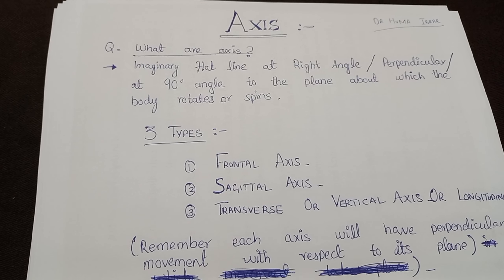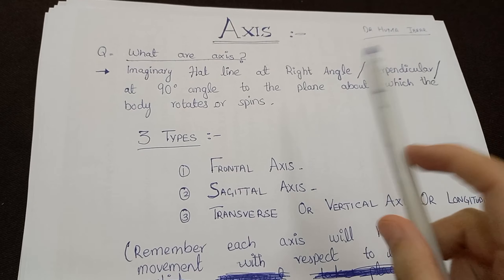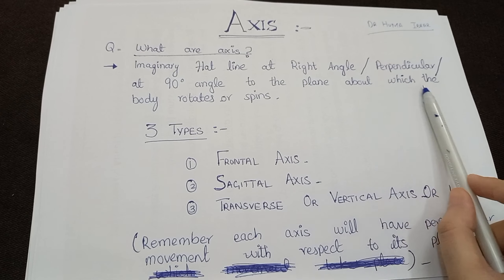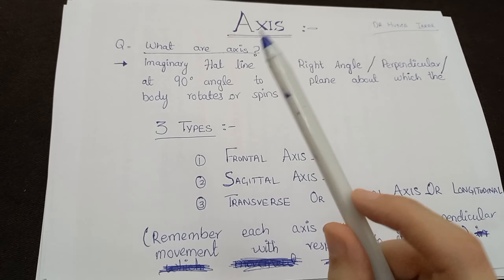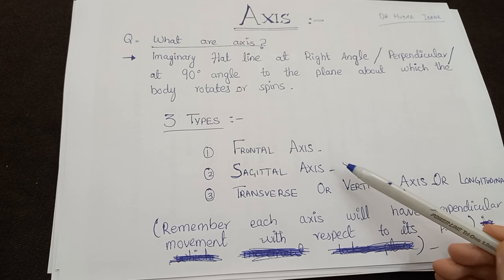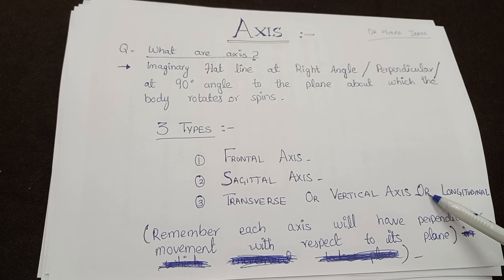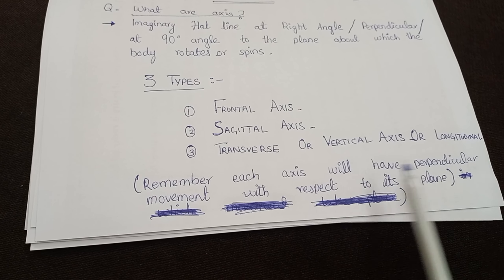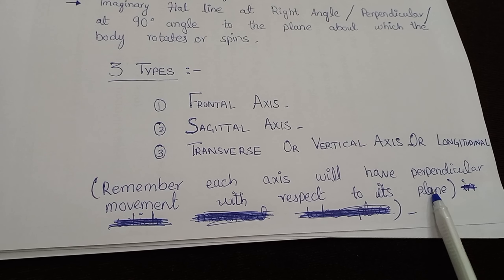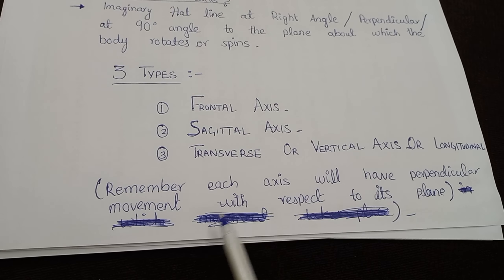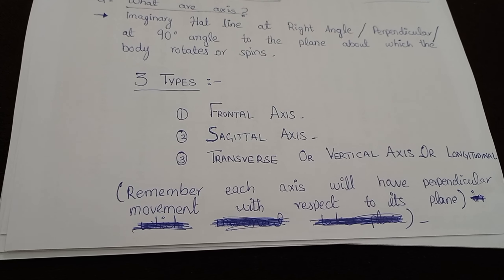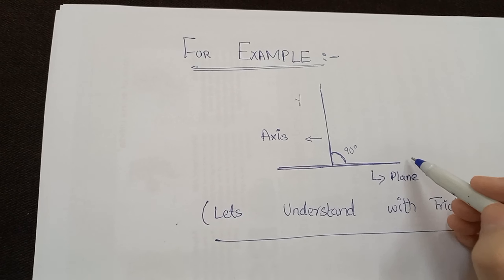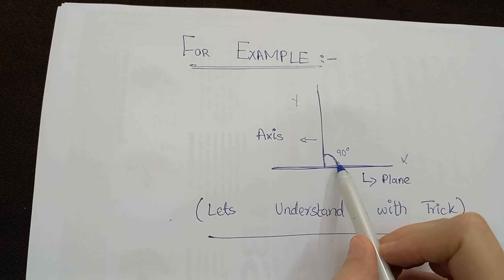Let's move towards the axis. What are axes? An axis is an imaginary flat line at a right angle — perpendicular, or at 90 degrees — to the plane, about which the body rotates or spins. There are three types of axes: frontal axis, sagittal axis, and transverse or vertical or longitudinal axis. Remember: each axis will have a perpendicular, or 90-degree, movement with respect to its plane — for example, the angle between an axis and its plane will be 90 degrees.